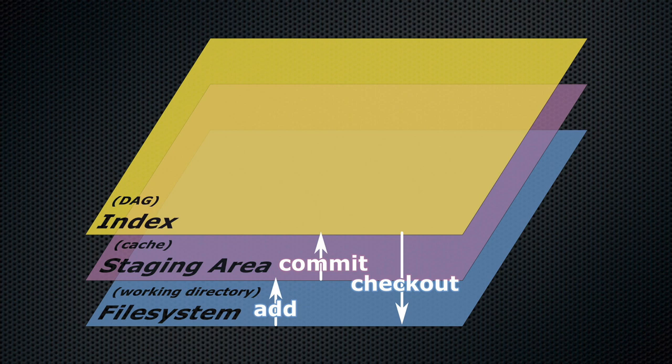So whenever we want to go the other way and have our local file system replicate a particular commit in the DAG, we use the git checkout command.